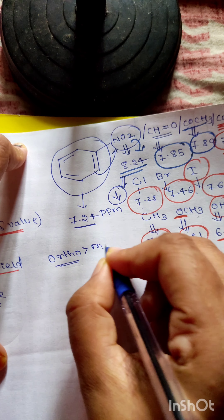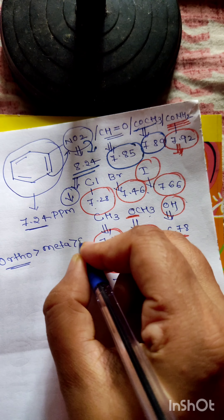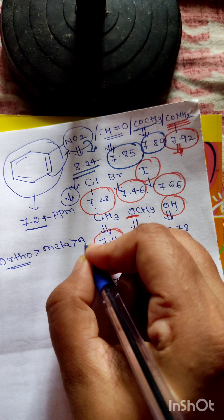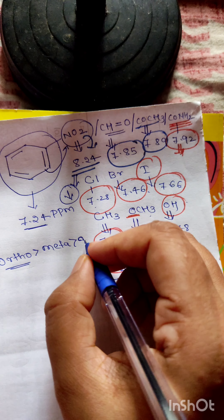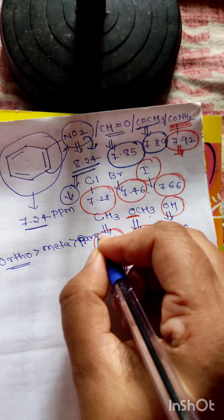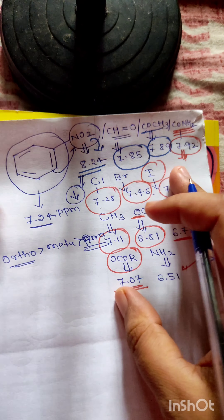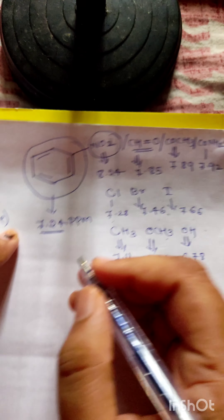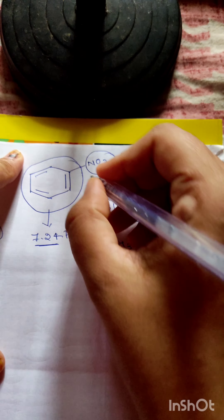As a rule: in meta position the chemical shift decreases compared to the ortho position, and in the para position it increases compared to meta. So the order is: ortho position is greatest, then para, then meta position.